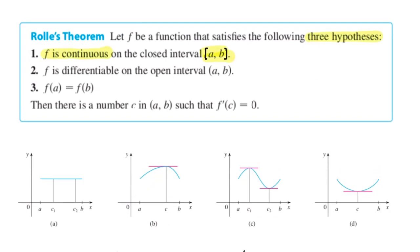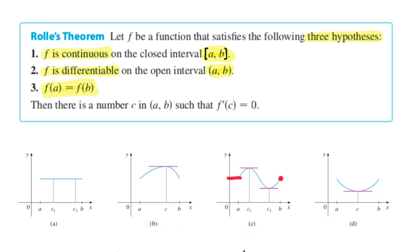The function also has to be differentiable, at least on the open interval — so the tangent line exists at every value between A and B, excluding possibly A and B themselves. No cusps, no vertical tangent lines. The third hypothesis is that the function's output values, the y-coordinates at endpoints A and B, are equal. In the four pictures drawn below, those hypotheses are all satisfied — continuous functions whose y-values at the endpoints are equal, no gaps or jump discontinuities, and they're differentiable with nice smooth tangent lines.